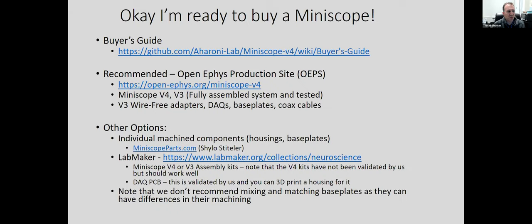If you're interested in individualized machined parts, Shiloh is someone we've worked with for a long time. He was our original machinist to help design the parts, so you can order directly from him — a lot of the housings and the base plates — if you want to build them yourselves. That's from miniscopeparts.com. One thing to note is that we don't necessarily recommend mixing and matching parts, because there's a bit of variability, particularly in the base plates and their size. You want to make sure that parts are compatible with each other.